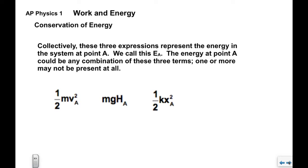Now collectively these three expressions together represent the total energy in the system at point A. We're going to call it capital E sub A. That's the total mechanical energy in the system at point A. The energy at point A could be any combination of these three terms depending on what the answers to the questions are, yes or no. We could have one or two or all three or conceivably none of them.